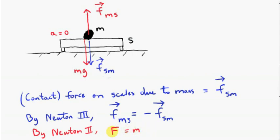Because the resultant force, capital F, has magnitude M times the magnitude of the acceleration, which is zero. So that tells us that the magnitude of the upwards forces acting on M must equal the magnitude of the downwards forces. So the magnitude of the upward force, FMS, the force on the mass due to the scales, is equal to the weight of the mass, which is mg.